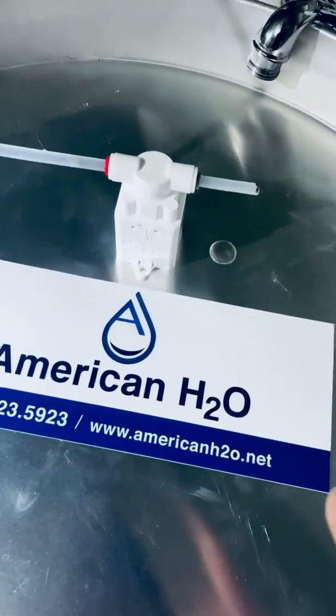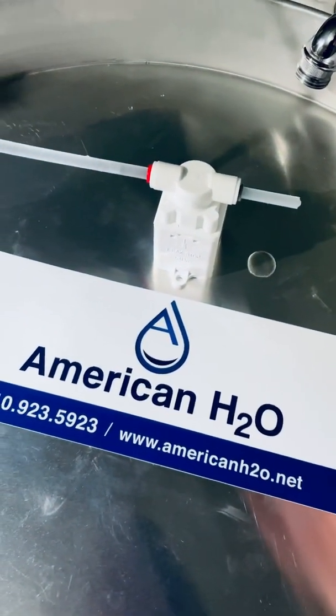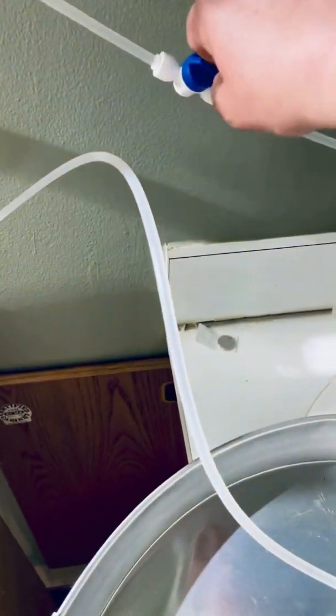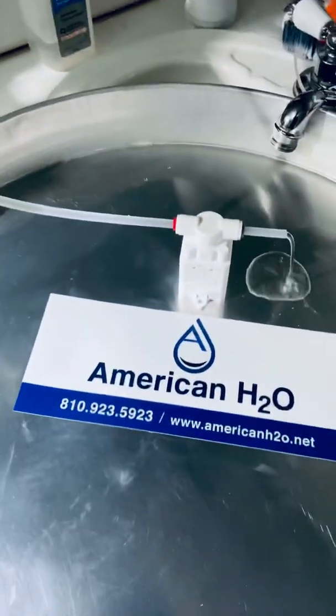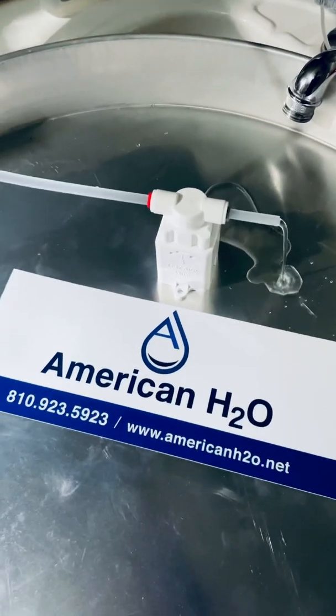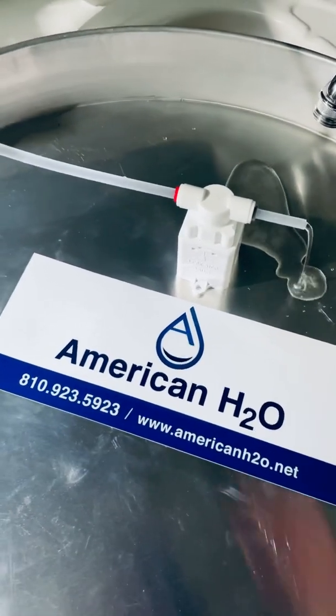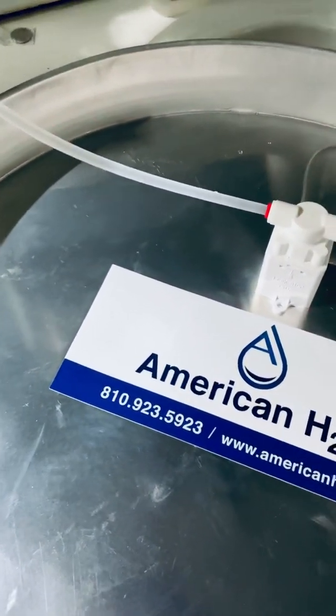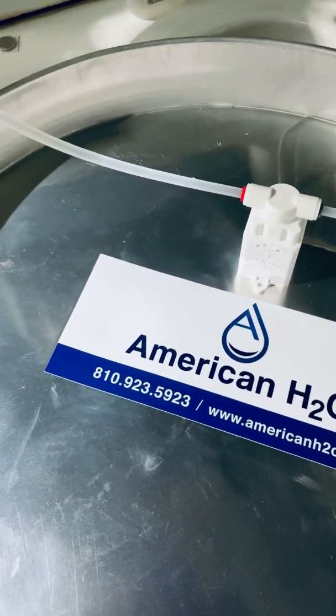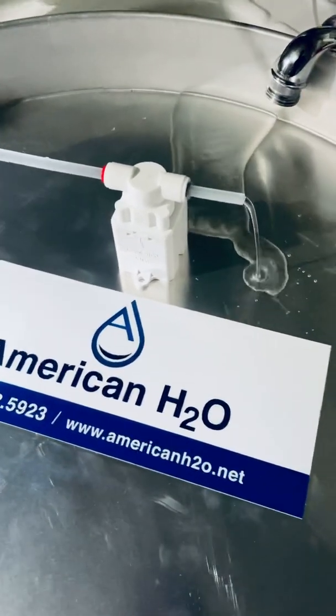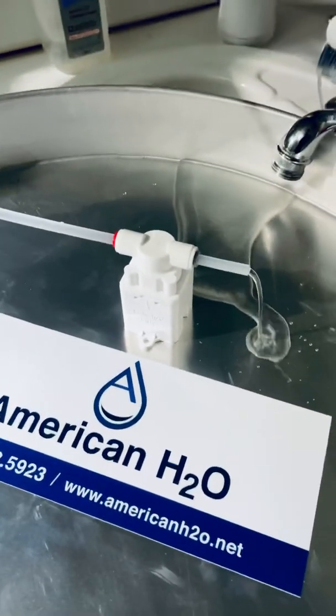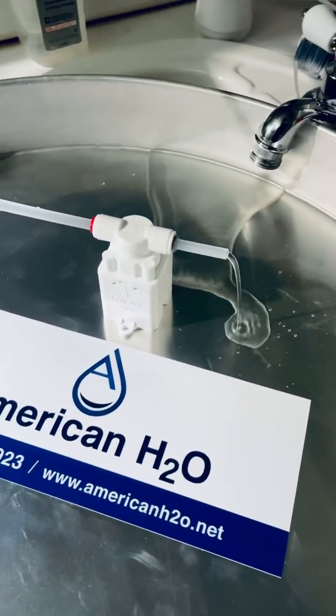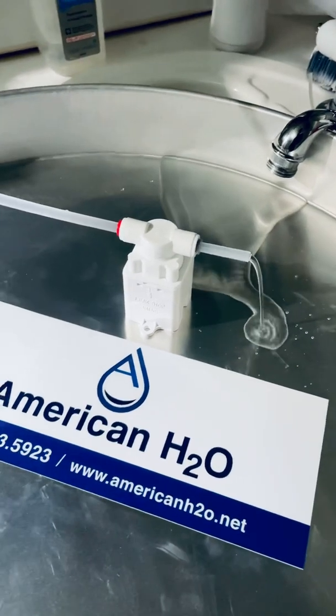Now what I'm going to demonstrate is what's going to happen if you have a leak. So we're going to turn this on, and as the water starts to fill up in this pan, what's going to happen is on the bottom of this valve, there's a little bit of silica gel, and what it will do is detect moisture, and I'll show you guys what it will do once it does detect moisture.